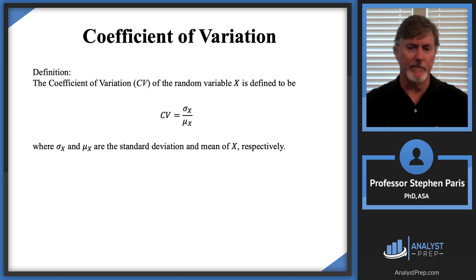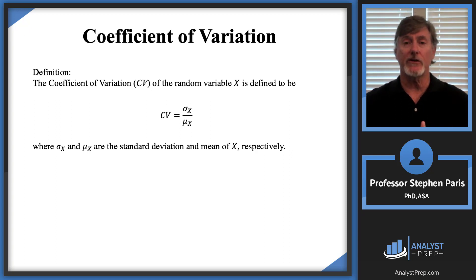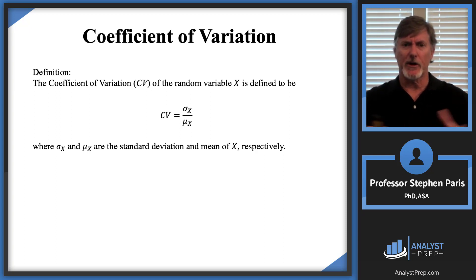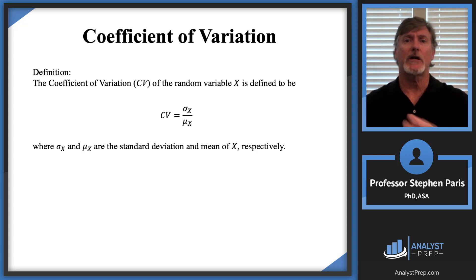If you have a random variable with a mean of 5,000, that doesn't tell you very much about the random variable except what its long-term average of observations is. It doesn't tell you anything about how spread out the things are. The other observations could be very close to 5,000, like 5,010, 5,020, or 4,990. You don't know that by just being given the mean.